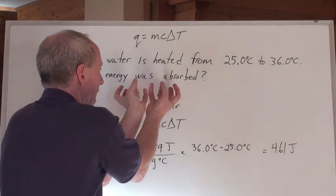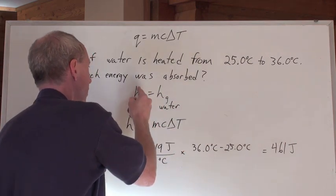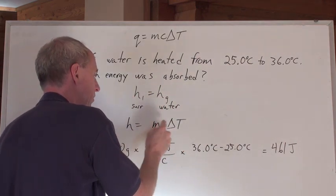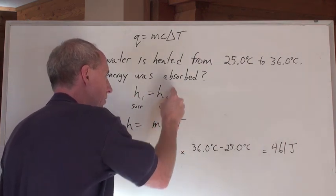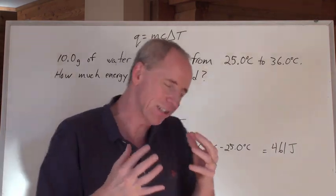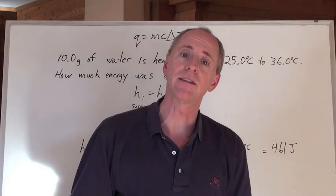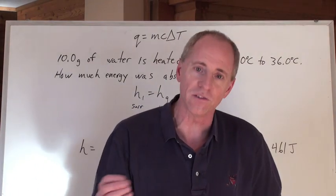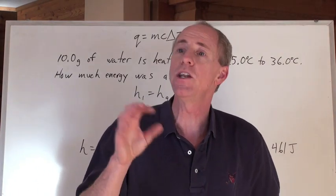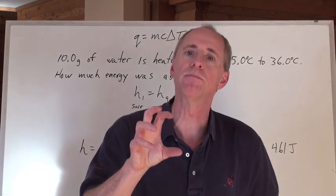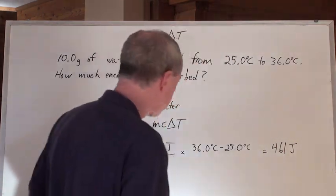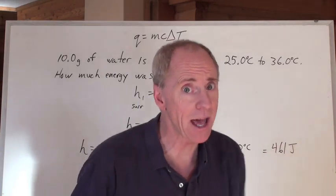The heat loss by the surroundings equals MC delta T, because the water is undergoing a temperature change. If the water was undergoing a phase change, then you would use that NH, moles times molar heat that we talked about. We're going to do that later, but not yet.